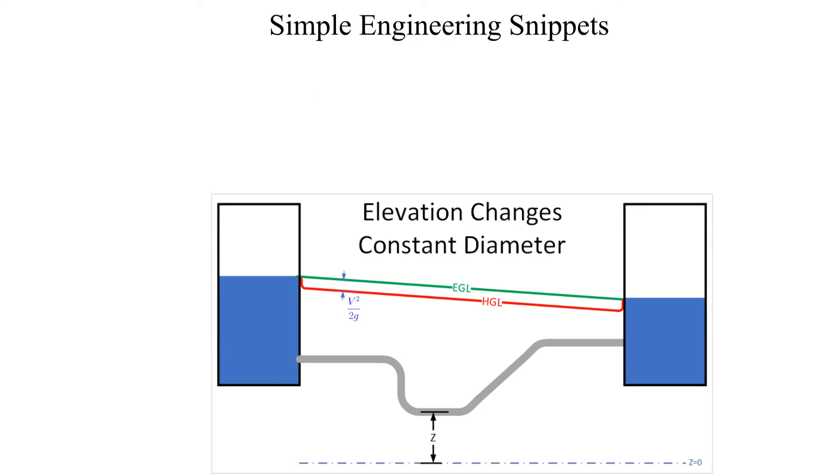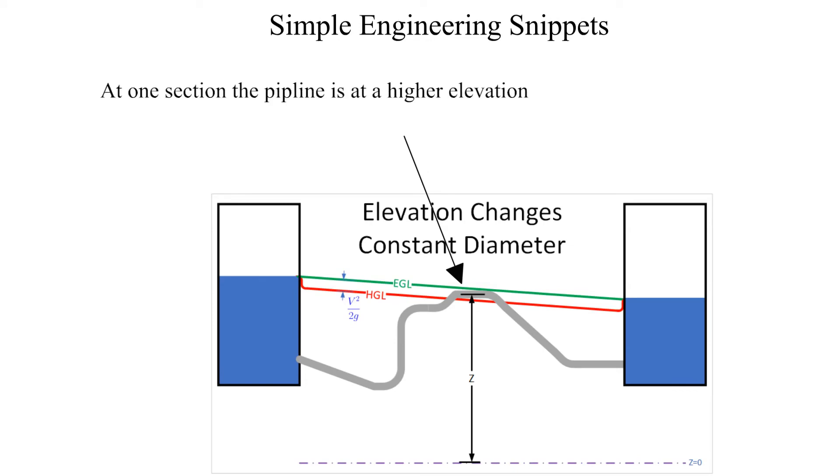Now let's consider the case with a different pipeline elevation profile. In one section the pipeline is at a higher elevation than the hydraulic grade line, which indicates that the pressure is negative. In future instructional videos we will cover why this is undesirable if not outright an unacceptable design.